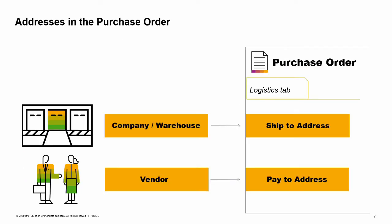Two important addresses are entered in the purchase order: the ship to and pay to addresses. The ship to address indicates the address where you would like the vendor to ship your purchased items. The ship to address can default in from two places depending on your settings. For item type purchasing documents, you can set the system to either default in the company address or the address of the warehouse in the first row of the document. To set the default to be the warehouse address, you need to flag the checkbox Use Warehouse Address in document settings. If the box is not flagged, the default address will be the company address.